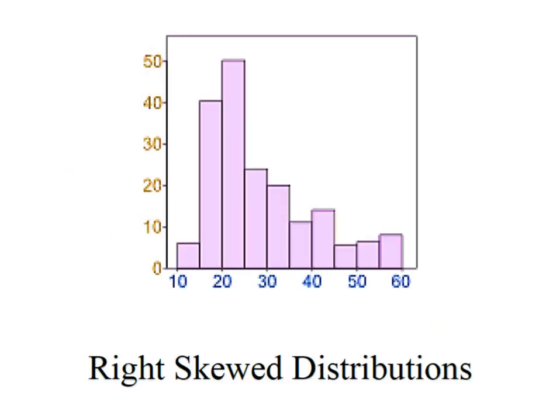So what happens when we have extremely large values that make the mean value higher than it probably should be, is we end up with a distribution that is skewed to the right. Remember reading the elongated tail as the direction of the skew.